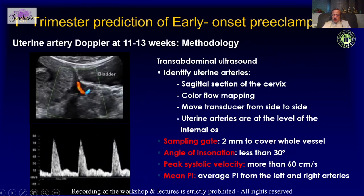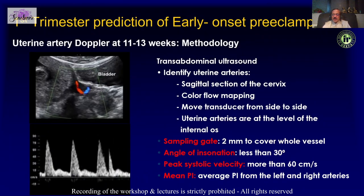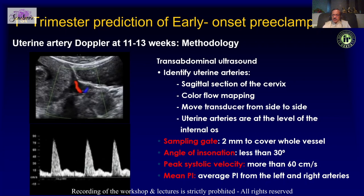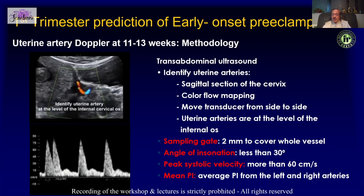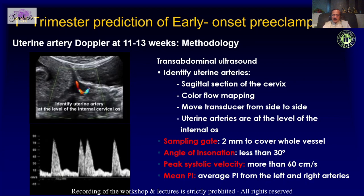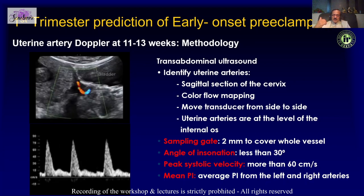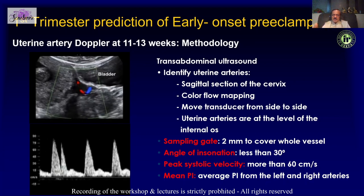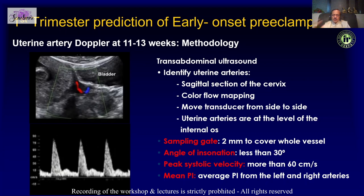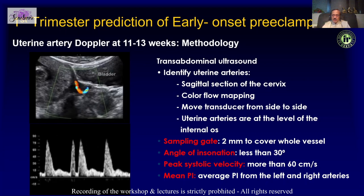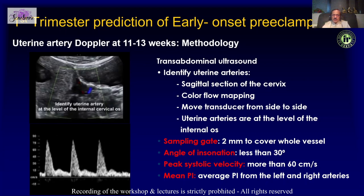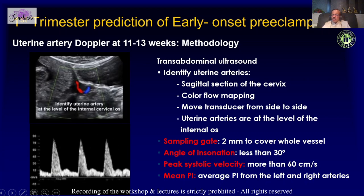Another important role of the NT scan is looking at the uterine artery to predict early-onset preeclampsia and hypertension. The FMF guidelines give us an approach to uterine artery assessment — one can do this transabdominally or transvaginally.